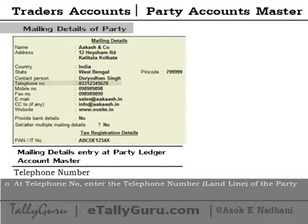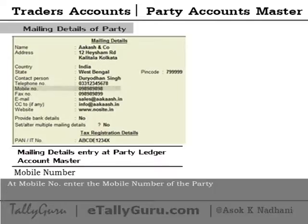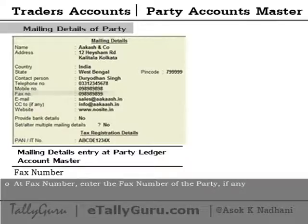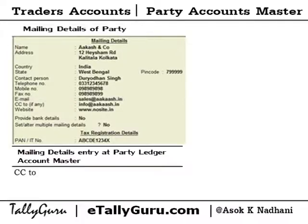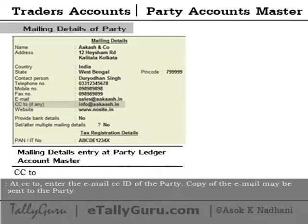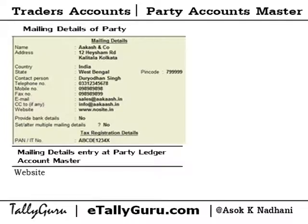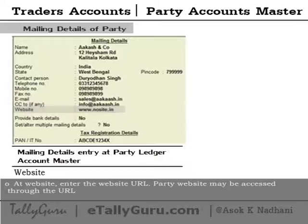At 'Telephone Number', enter the landline telephone number of the party. At 'Mobile Number', enter the mobile number of the party. At 'Fax Number', enter the fax number of the party if any. At 'Email', enter the email ID of the party if any — email may be sent to the party through Tally ERP9 using this ID. At 'CC2', enter the email CC ID of the party — a copy of the mail may be sent to the party at this email ID. At 'Website', enter the website URL — the party's website may be accessed through the URL.